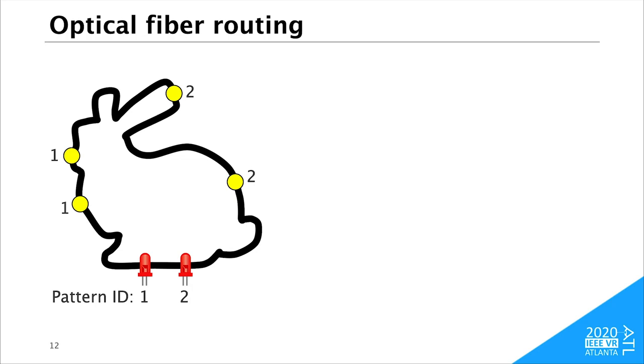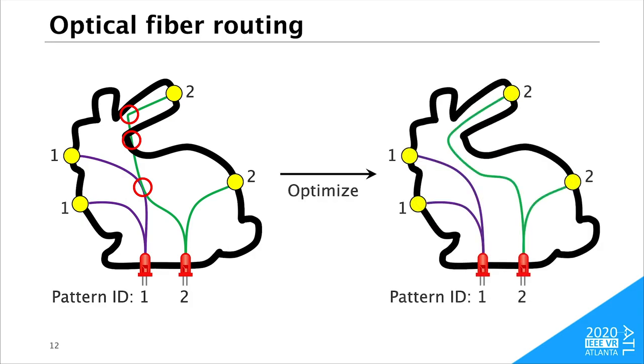After marker locations are determined, we solve another problem. The optical fibers connect each infrared LED to corresponding markers which share the same pattern ID. If the fiber routes are determined randomly, there are several problems: such as a part with a very small curvature radius causing significant loss of infrared light, a part locating outside the object, and collision between fibers transmitting different blinking patterns. So we carefully designed the fibers to solve these problems to obtain the optimal fiber routing.